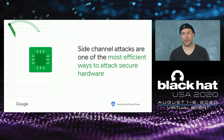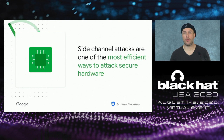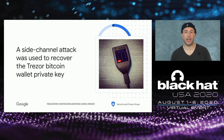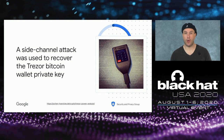Side-channel is one of the most efficient ways to attack secure hardware because it does not attack the algorithm, which is well-vetted, but instead targets the implementation of it, which is less vetted. An example of how powerful a side-channel attack can be: people were able to lift out from a Trezor, a hardware Bitcoin wallet, the private key of Bitcoin wallets.